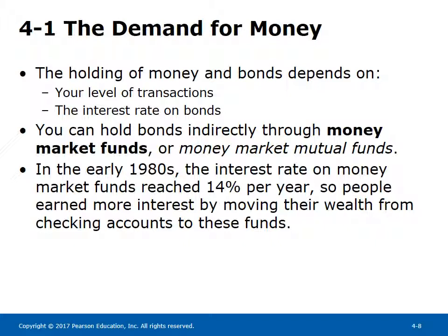In the early 1980s, the interest rate on money market funds reached 14% per year, so people earned more interest by moving their wealth from checking accounts to these funds.